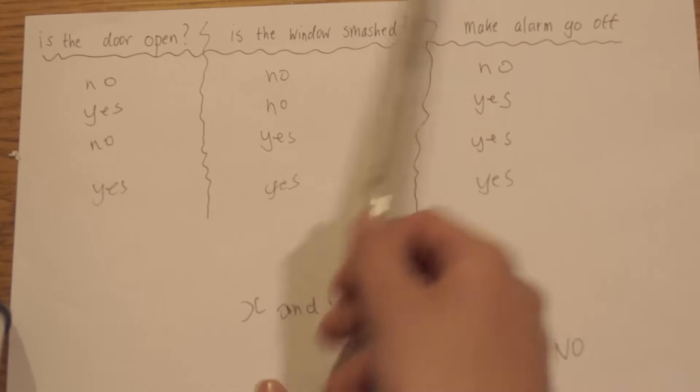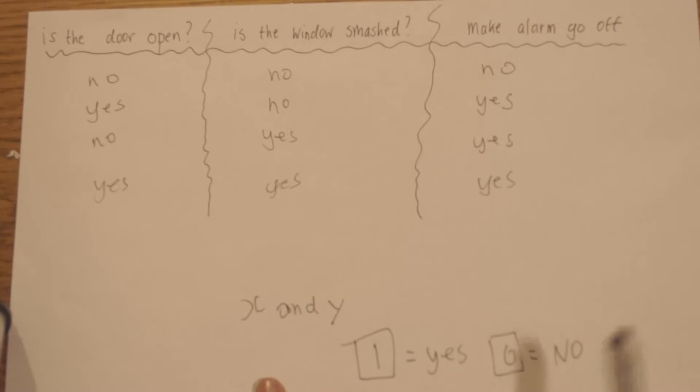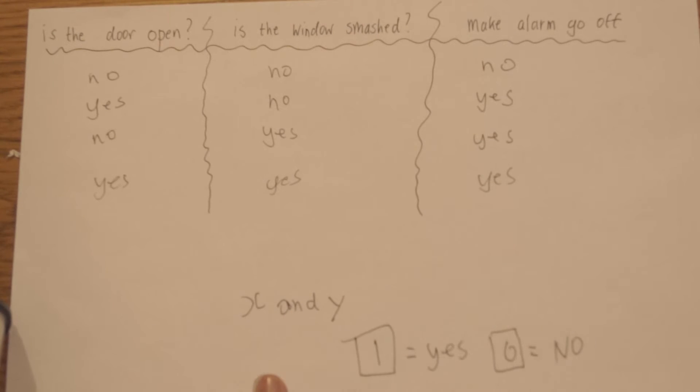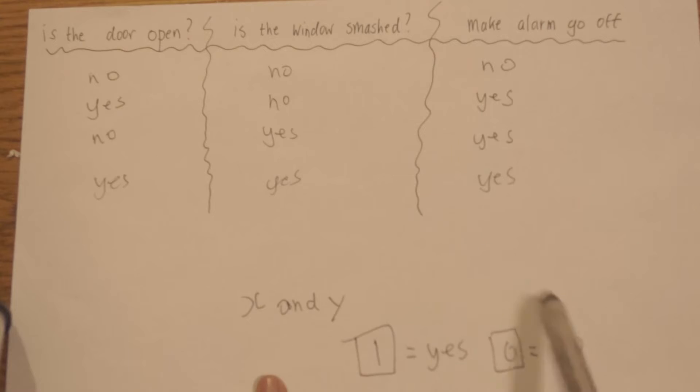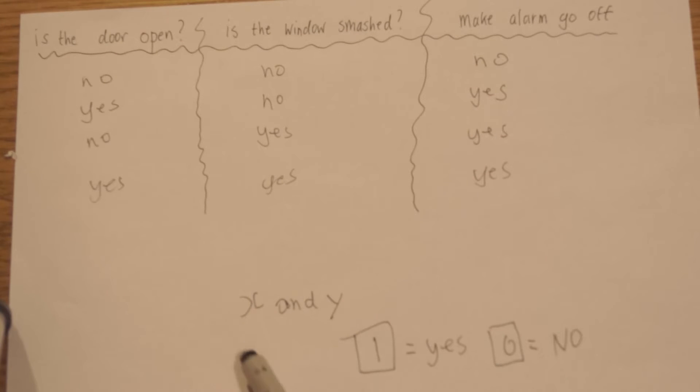Now we can actually make this into zeros and ones. We can make this burglar alarm and put it into a zero and one. We can substitute the inputs, the door and the window smashed, and create it into an x and a y. After we substitute these as x and y, we can make one as yes and zero as no. That is basically the conversion. Now let's get to the juicy part of this tutorial.